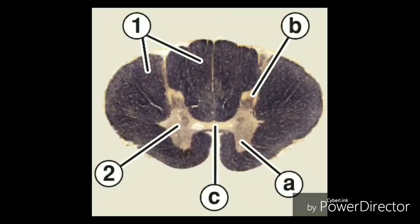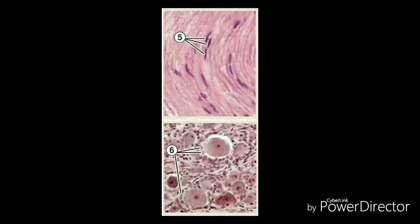The smaller branch, called the posterior primary ramus, turns posteriorly to supply the skin and muscles of the back of the body. The larger branch, called the anterior primary ramus, turns anteriorly to supply the skin and muscles of the front of the body and forms most of the major nerves.